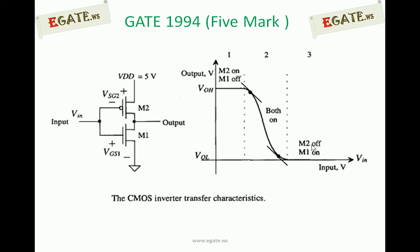We can draw the voltage transfer characteristics (VTC) for the CMOS inverter. During the initial low voltage portion, M1 (NMOS) is off and M2 (PMOS) is on — this is Region 1. Region 3 is where NMOS is on and PMOS is off. In between is the transition region, where output changes from VOH to VOL — from VDD towards 0. During this transition, both transistors are in the on condition, specifically in the saturation region.